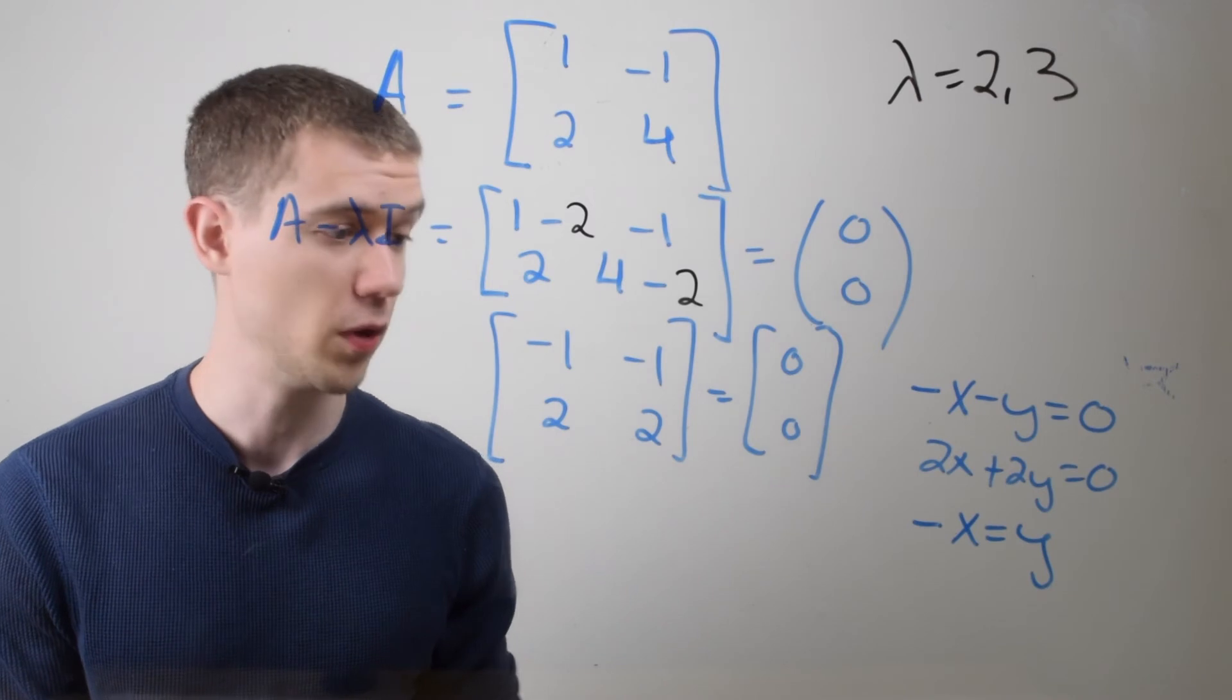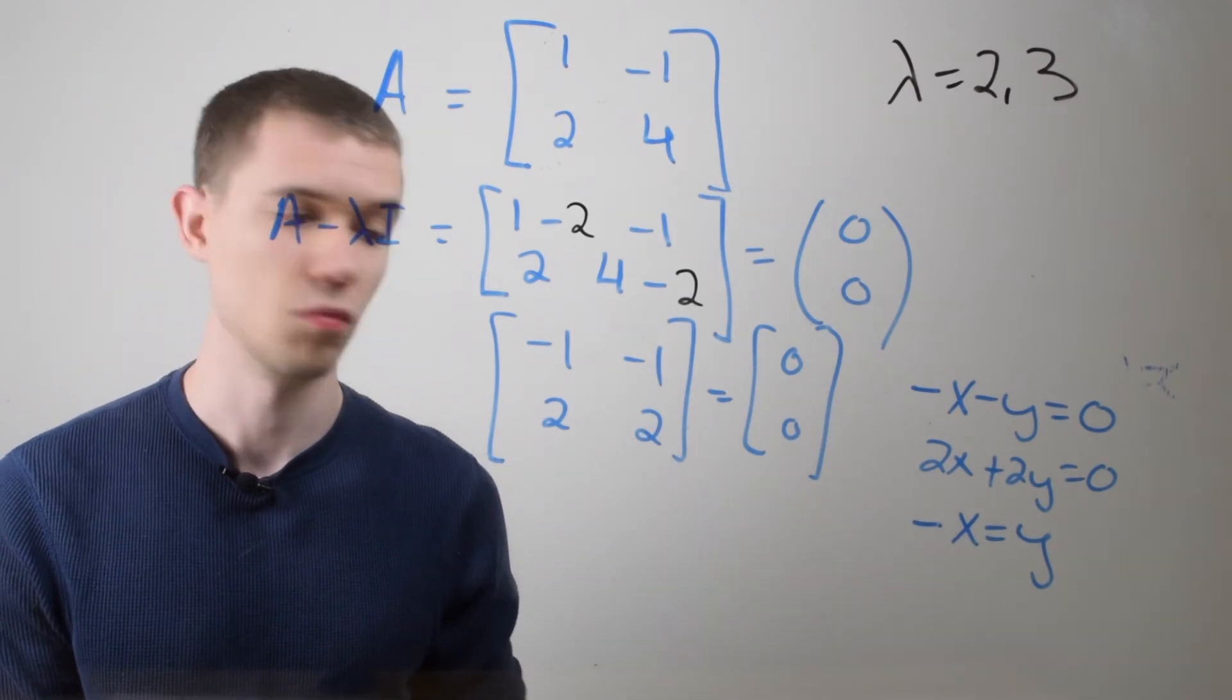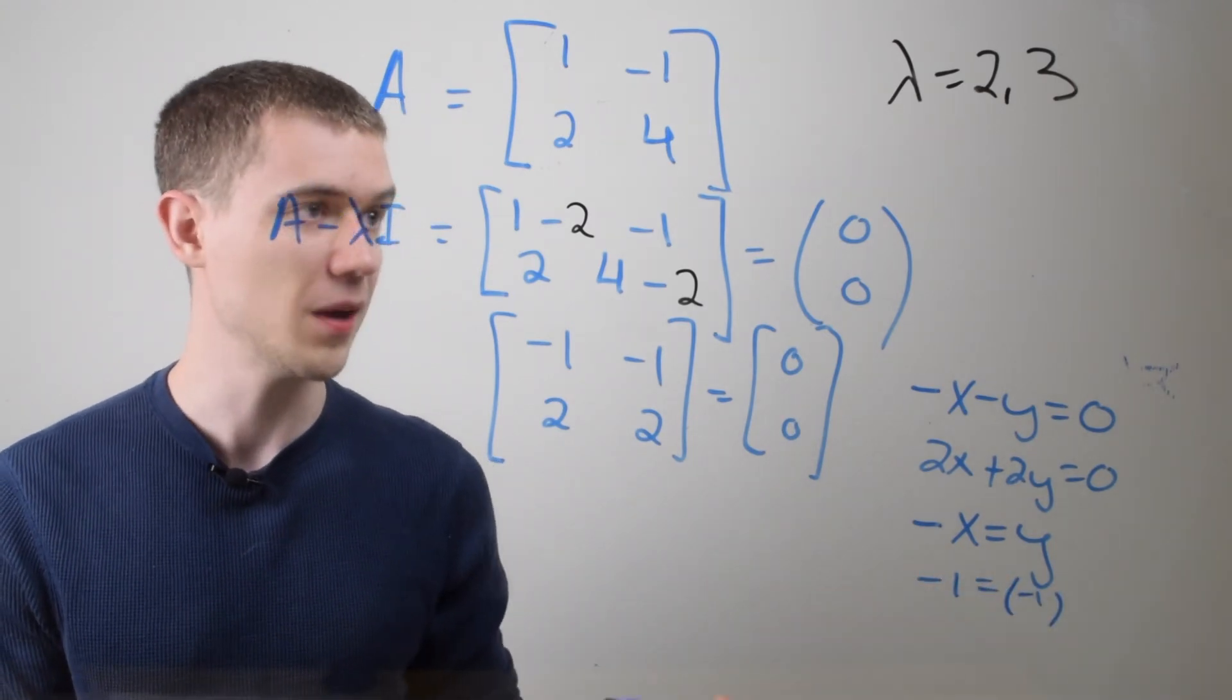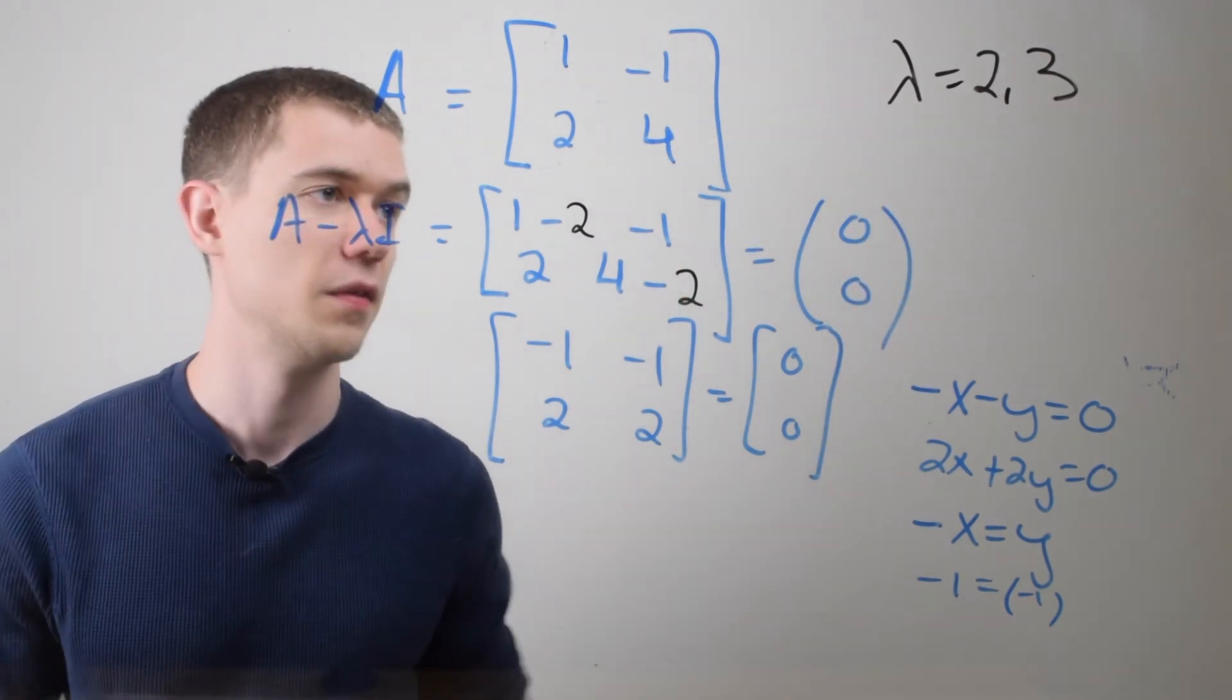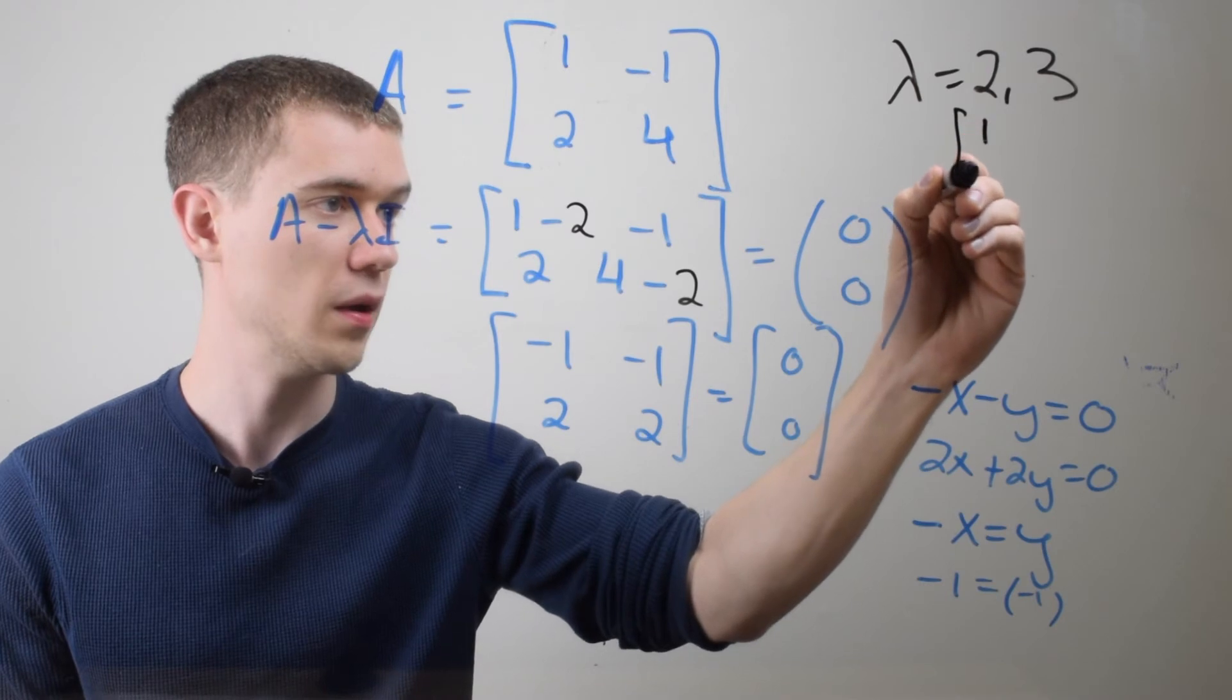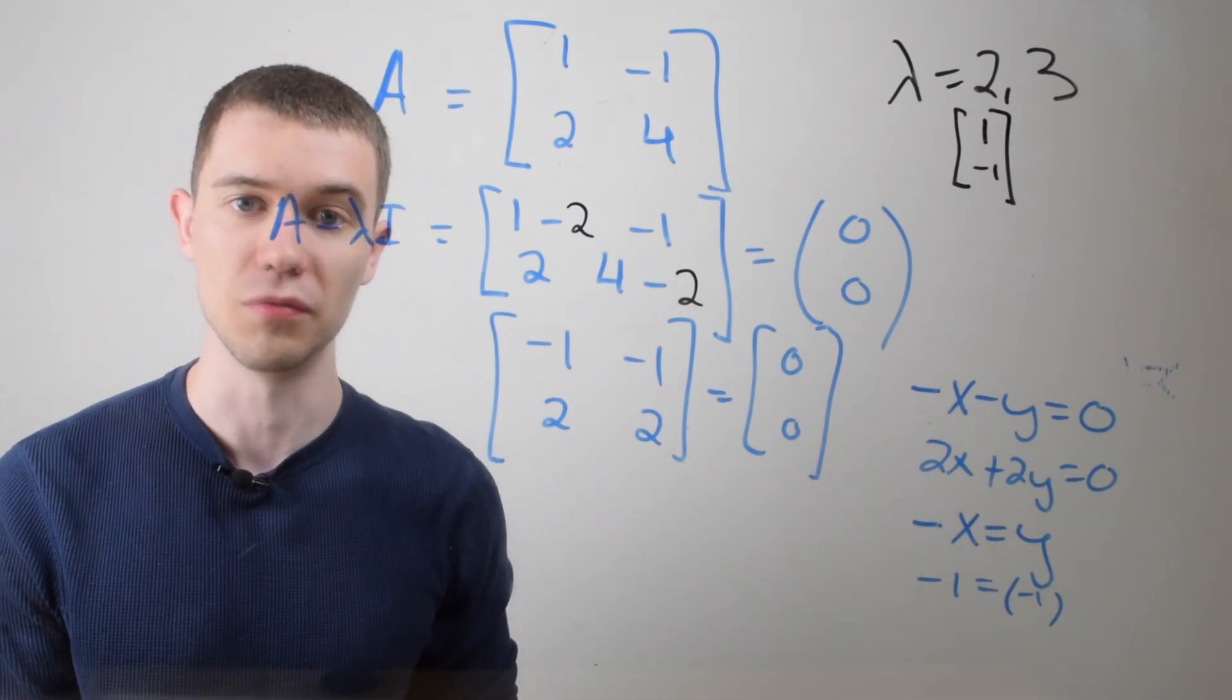What kind of numbers solve that? Well, numbers that look like 1 and -1, right? -1 is equal to minus -1. Yeah, it's a little weird to think about. So the eigenvector that's associated with 2 is the vector 1, -1. Because I can plug these values into either of these equations, and it solves them.